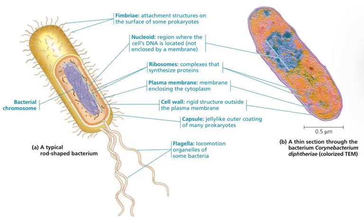In prokaryotes, there is no nucleus and no other membrane-bound organelles. We do have an area called the nucleoid, which is not bound by a membrane where the DNA sits. The DNA in a bacterium or an archaeon is a circular chromosome — one chromosome, and it is a circle. There are also going to be ribosomes. Ribosomes are not membrane-bound compartments; they are complexes of RNA and protein, and that's why bacteria and archaea are allowed to have them.